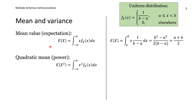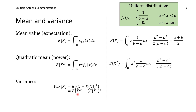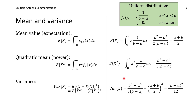The variance describes how large the variations around the mean value are. We take the random variable, subtract its mean, take the absolute value squared, and compute the expected value. This simplifies to the quadratic mean minus the mean squared — which is the standard formula for variance. In practice, we compute the quadratic mean, square the mean, and subtract them to get the variance.